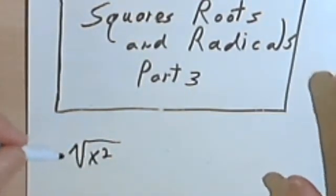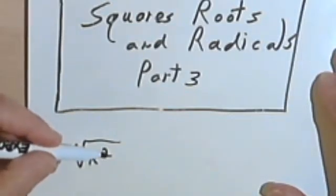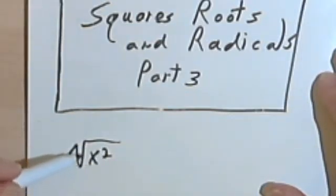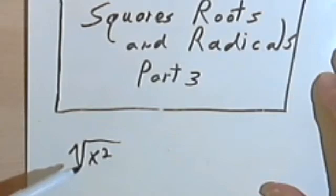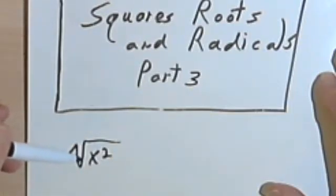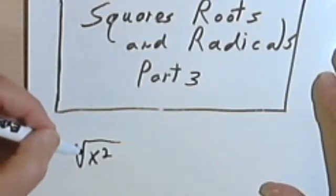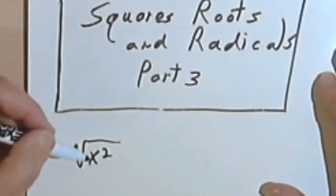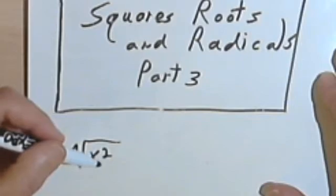So let's say I've got the square root of x squared. So what this is asking me to do is find the number, the variable, that I can square to get x squared. This is not a trick question. It's really as easy as it sounds. So the variable that I square to get x squared would be x.